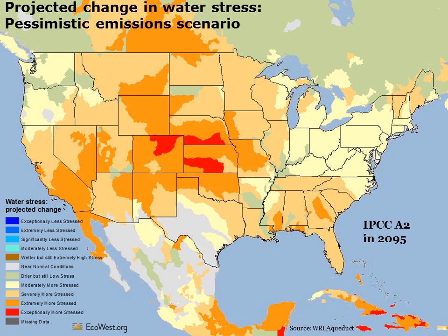But if you switch to the pessimistic A2 emission scenario, which involves much warmer temperatures and in many parts of the west a drier climate, you can see that the stress levels are much higher. There's no place in the continental United States that has less water stress in 2095.